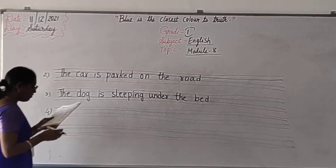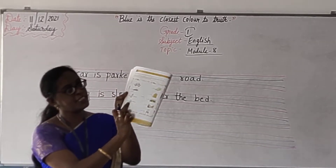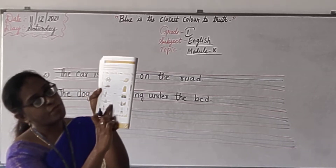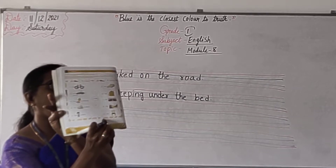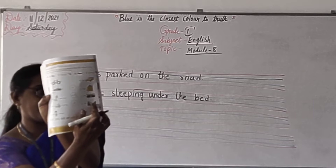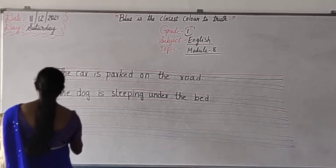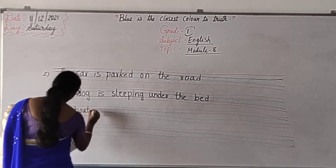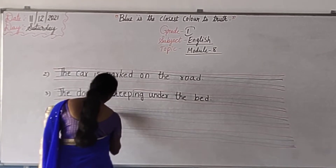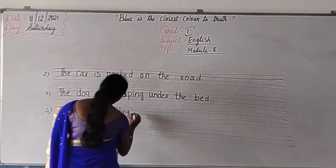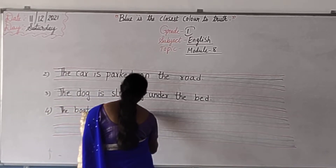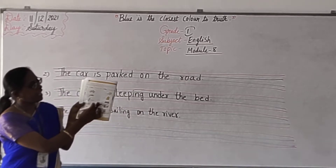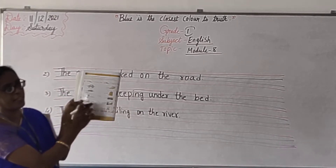Then the fourth one — what is the picture? The boat. The boat is sailing. Where? On the river. River picture is there, right? You have to write: The boat is sailing on the river. See, in, under, on — these are all there. We have to choose and write correctly. Understanding?